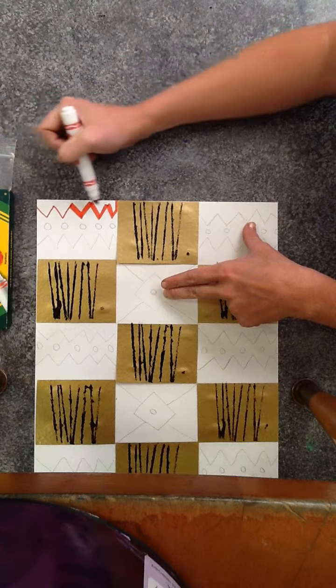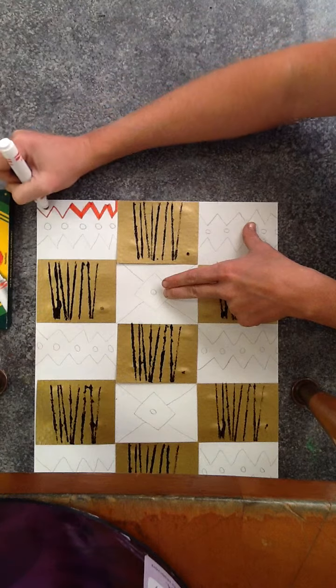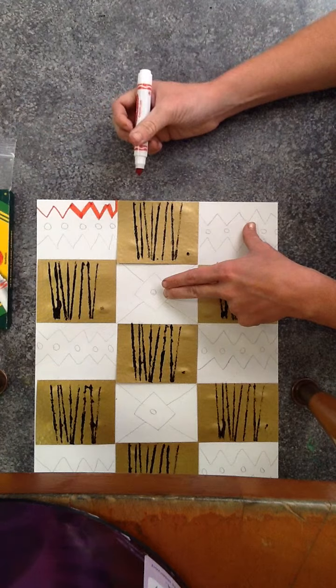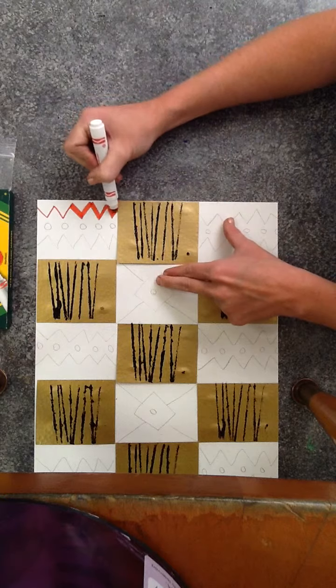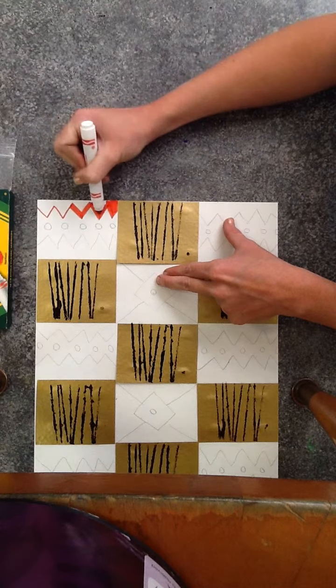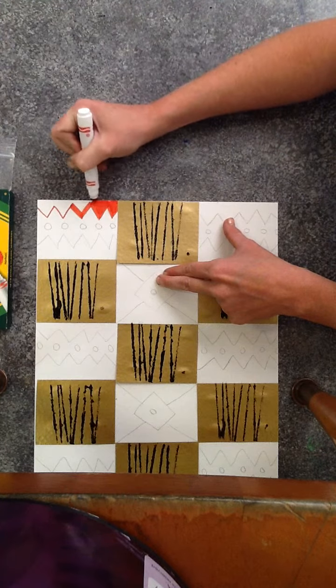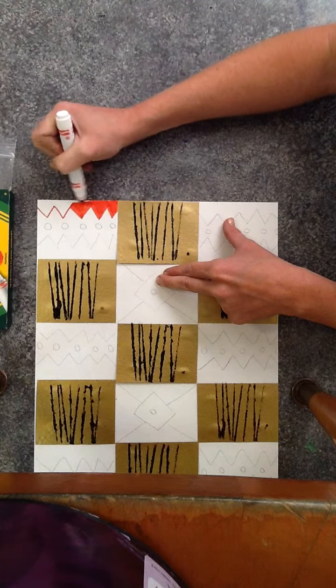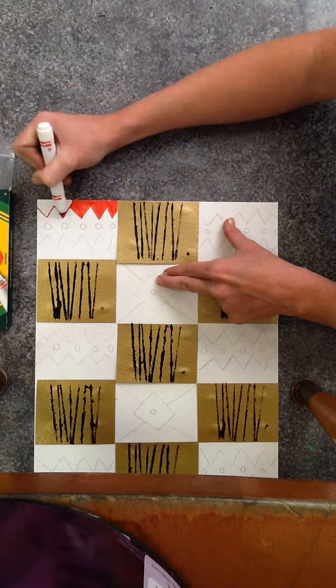Now, I want this whole section to be red. I can choose to use the tip, but it's going to take a long time. If I use the side, I can color a lot faster and, in my opinion, more effectively because it looks so much neater.